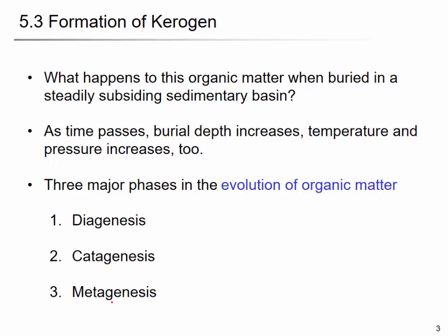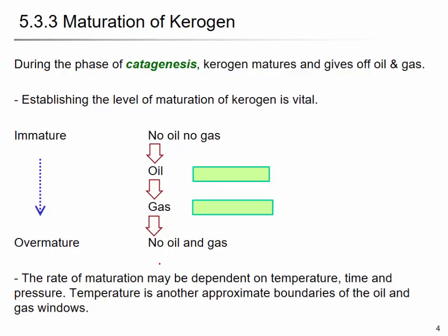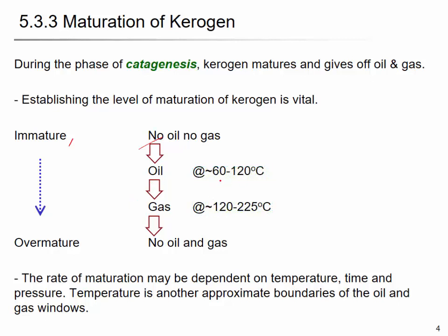We will talk about catagenesis today. During this phase, kerogen matures and gives off oil and gas. In the early stage, it doesn't produce oil and gas. But when the temperature is proper — in the range of 60 to 100 degrees Celsius — it will produce oil. When the temperature is higher than that, it will produce gas.